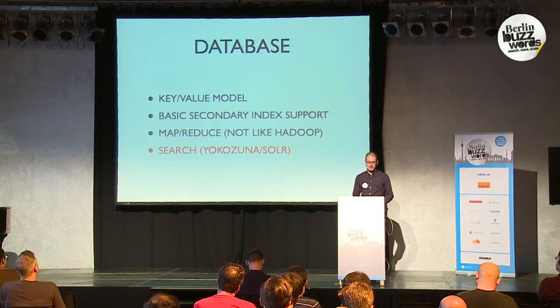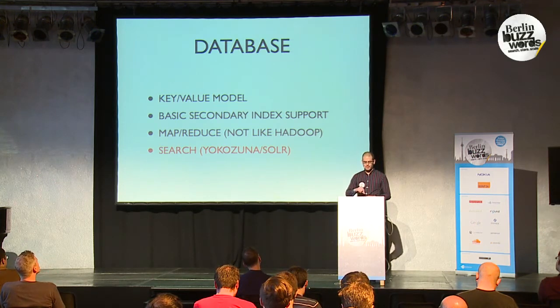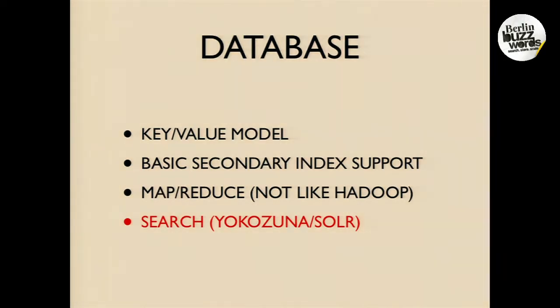So React is a database, primarily key value model, but it has more than that. It has basic secondary index support — for example, you can add a tag to your objects to do exact term queries or range queries. It has MapReduce, but when people hear MapReduce they tend to think Hadoop — it's not quite that. It's more of a real-time transformation where you already know your keys, and it allows you to use JavaScript or Erlang to transform the values of those keys. And also there's search, which is what I want to focus on today. Currently there's React search, which is a Lucene-like implementation written purely in Erlang, but it's kind of limited — it doesn't have all the great functionality that you see in Lucene and Solr.